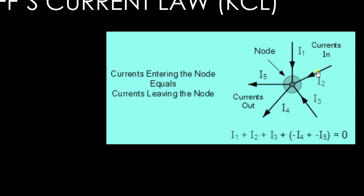As shown in the figure, the currents I1, I2, and I3 are the incoming currents, and the currents I5 and I4 are the outgoing currents. The arrows towards the node pointing inwards are incoming currents. The arrows which are moving away from the node are outgoing currents.